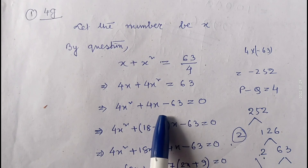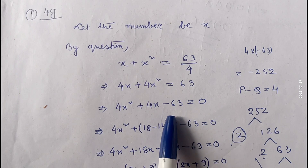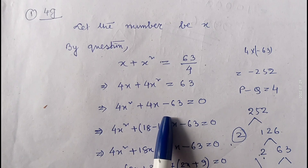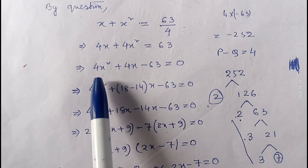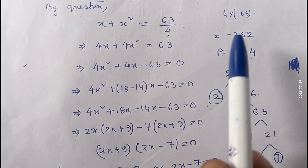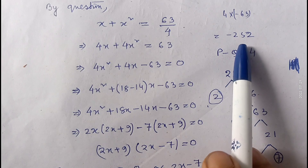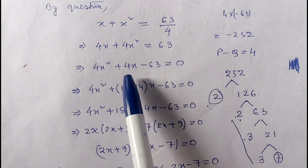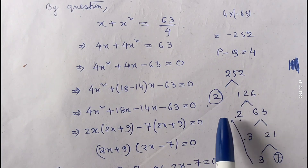You can use the quadratic formula where this is a, this is b, and this is c, or you can go for middle term factorization. Here I am solving by middle term factorization, but it's up to you. In exercise 4C I explained how to do middle term factorization. We first multiply the coefficient of x square with the constant term: 4 into minus 63 gives minus 252.